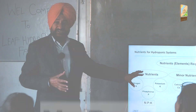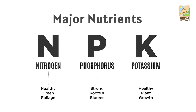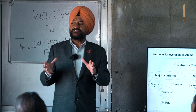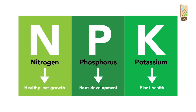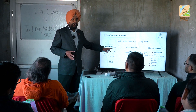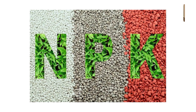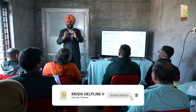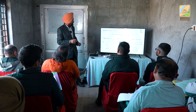Some of them are major nutrients — they are required in bulk, in large quantities, and all your fertilizers are named after them. One is nitrogen, one is phosphorus, and one is potassium. That's why all your fertilizers are called NPKs: nitrogen, phosphorus, potassium. Different variations are required for different purposes, and we will come into that.